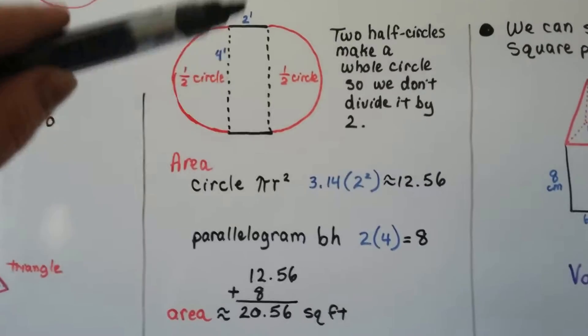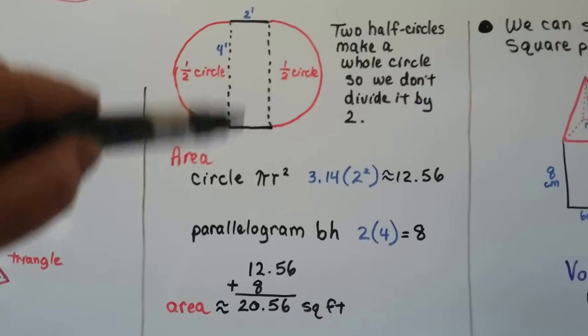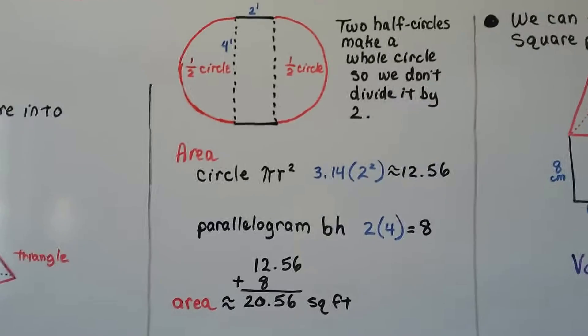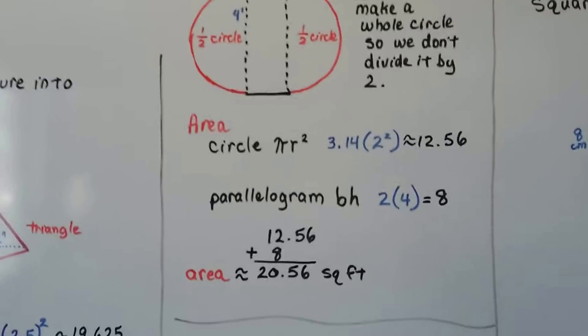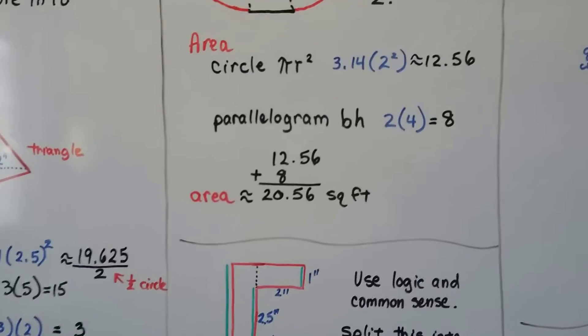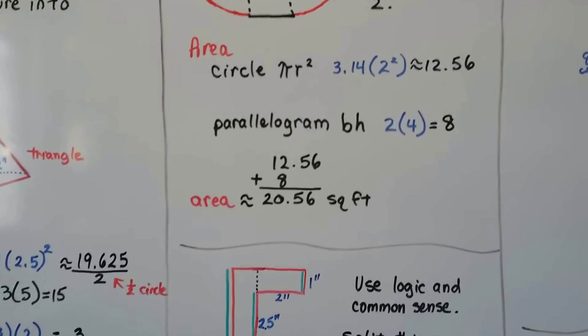We do the parallelogram, the base times height, or the rectangle, length times width, same thing. We get 2 times 4, which is 8. And we can see the one little mark here means feet, so we add these two amounts together, and the area is approximately 20.56 square feet.